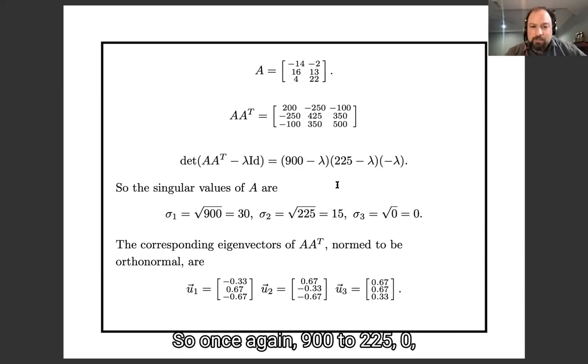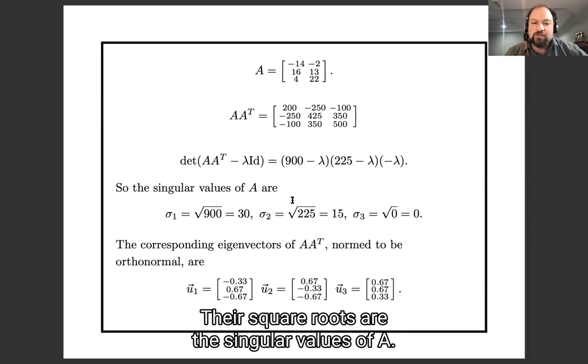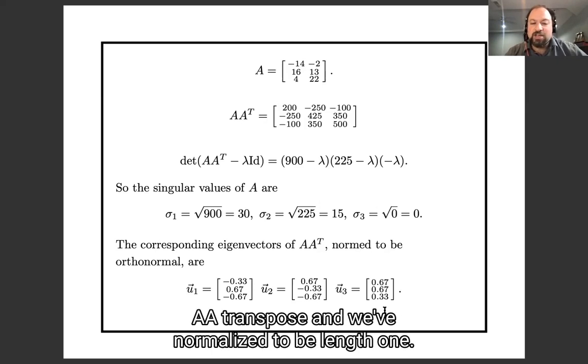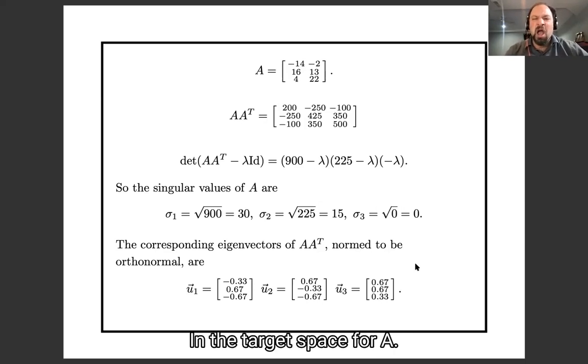So once again, 900, 225, 0. Those are the eigenvectors of A, the eigenvalues of A transpose. Their square roots are the singular values of A. These over here are the eigenvectors of A, A transpose, and we've normalized them to be length 1. And they are also the singular vectors in the target space for A.